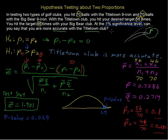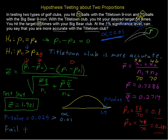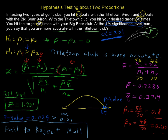We have a significance level — that 1% significance level — so alpha equals 0.01. This p-value of 0.029 is greater than our alpha of 0.01, so we fail to reject the null hypothesis. We are not accepting the null — we are simply saying there is not enough evidence to say that the Titletown club is more accurate. Note that if our alpha were set at the 5% significance level, we would have been able to reject the null. That was an example about hypothesis testing about two proportions.